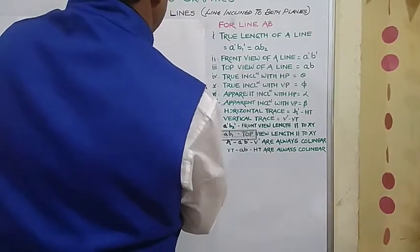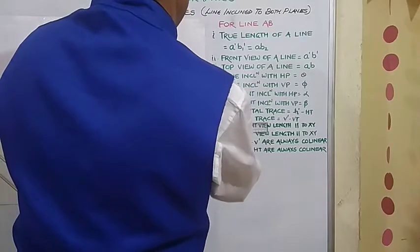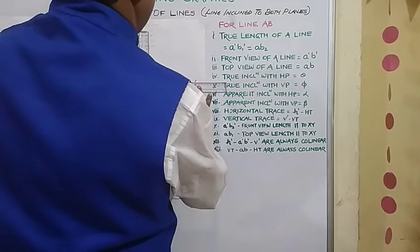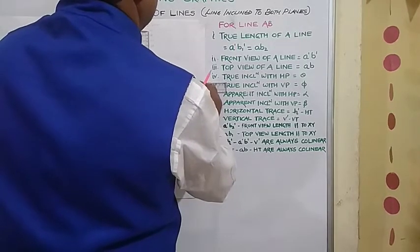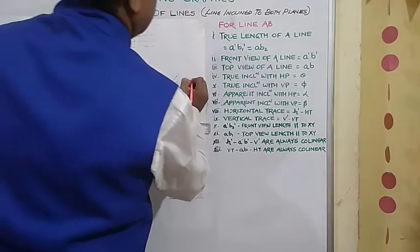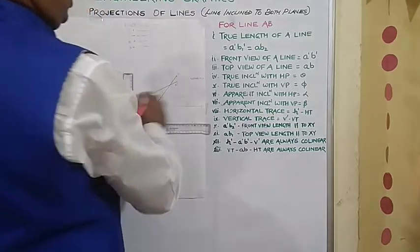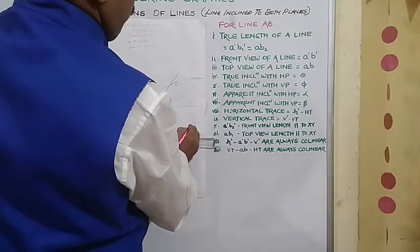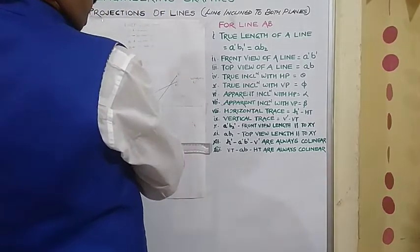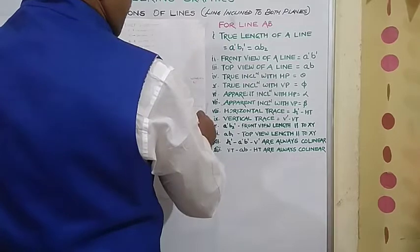Now the next step is there. From B two dash, from B one go vertically up. From B one go vertically up. Already B dash line is there with us, B dash point. So from this B dash point draw faint line. This is locus of B dash. Locus of B dash. So this is B one. So this will be B one dash.